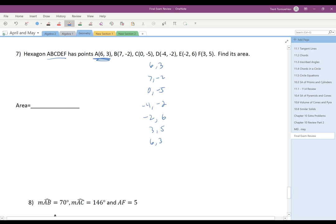Then we create the shoelace by doing 6 times -2, which is -12. Then 0 times -2 is 0, -4 times 6 is -24, -2 times 5 is -10, 3 times 3 is positive 9. Always checking back over those to make sure we didn't get calculation errors.